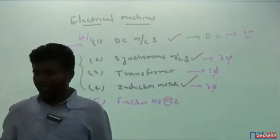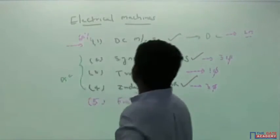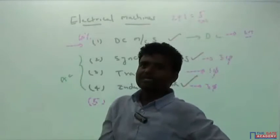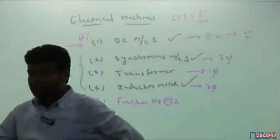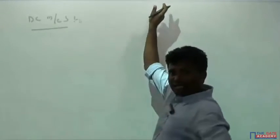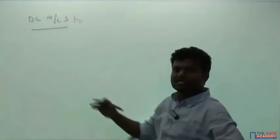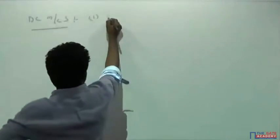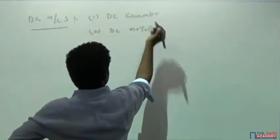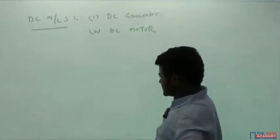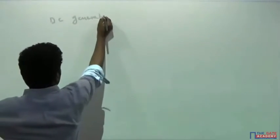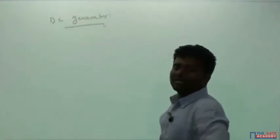We will discuss topics one by one. If you have any doubt, even a simple thing, you can ask me. Even something as simple as two plus three equals five — I can explain how that answer comes. Now, in DC machines, we have both a DC generator and a DC motor, just as synchronous machines consist of a synchronous generator and synchronous motor. So let's begin with the simple construction and principle of the DC generator.